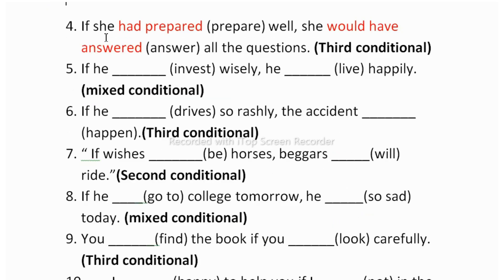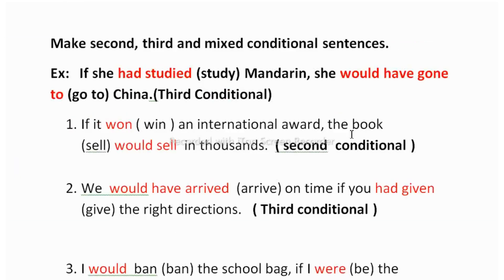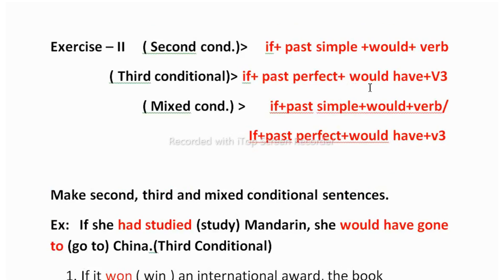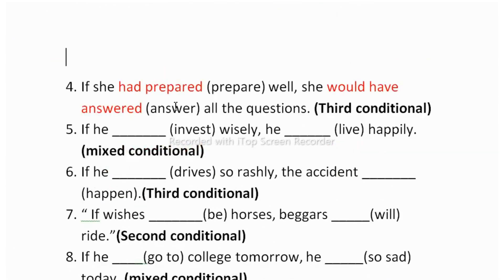The next one is: 'If she dash prepare well, she dash answer all the questions.' You have to add third conditional. Structure: if + past perfect + would have + V3. Answer: 'If she had prepared well, she would have answered all the questions' — 'prepare' becomes 'had prepared' and 'answer' becomes 'answered' (V3).